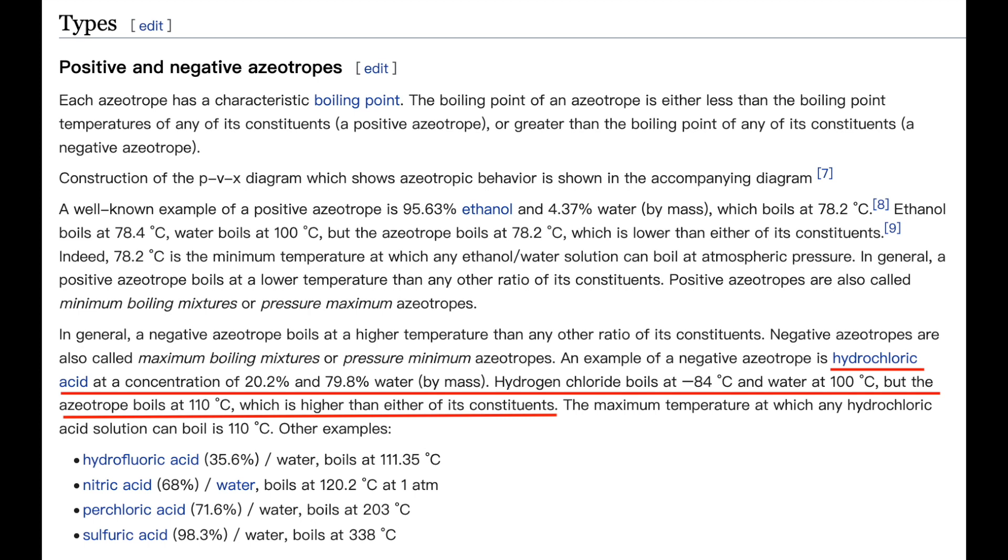Additionally, the azeotrope has a fixed composition of 20.2% hydrogen chloride, which is quite high, while the rest being water.